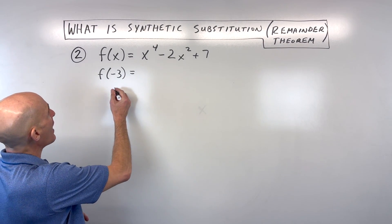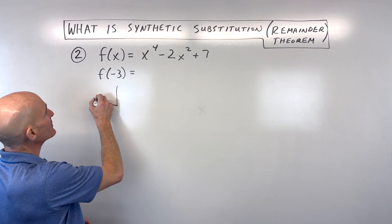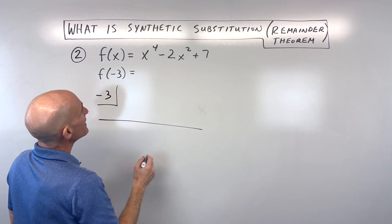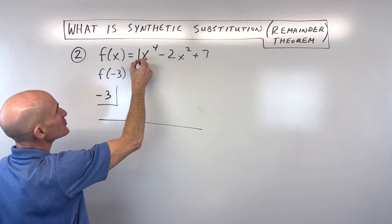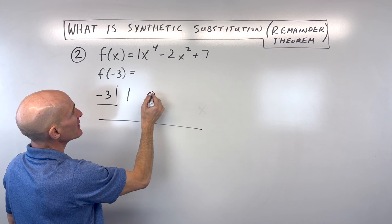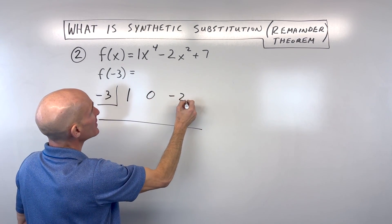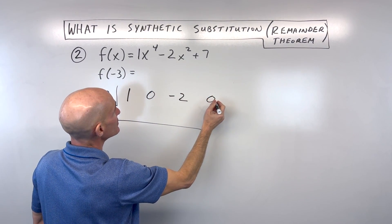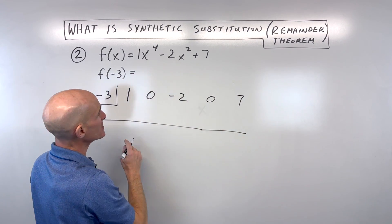So let's go to this problem now. How would we actually evaluate this? Well, using the synthetic method, we're going to start off with our coefficients. We've got 1x to the 4th, 0x cubed, so we're going to put that placeholder, negative 2x squared, 0x, another placeholder, and then 7. So we had two missing terms here.